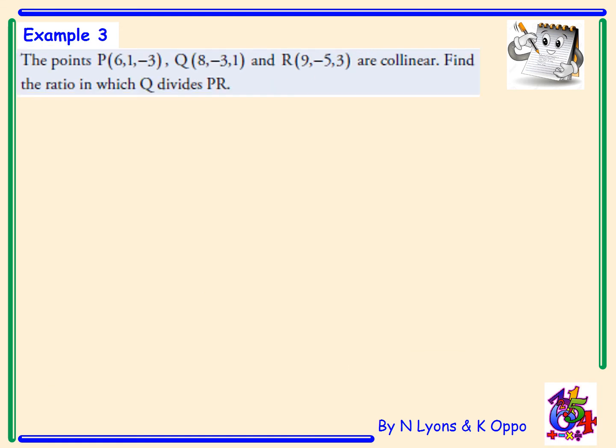Example 3: The points P(6,1,-3), Q(8,-3,1), and R(9,-5,3) are collinear. Find the ratio in which Q divides PR.